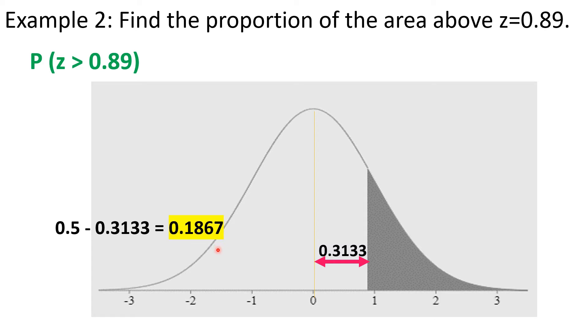So in example 1, while we were asked to solve for the probability, which is also equal to the area of the shaded region, here in example 2, proportion means the same thing. The area under the normal curve, as well as the probability, and the proportion tell us the same thing or mean the same thing. So the value of this notation is also 0.1867. The proportion of the area above z equals 0.89 is 0.1867.